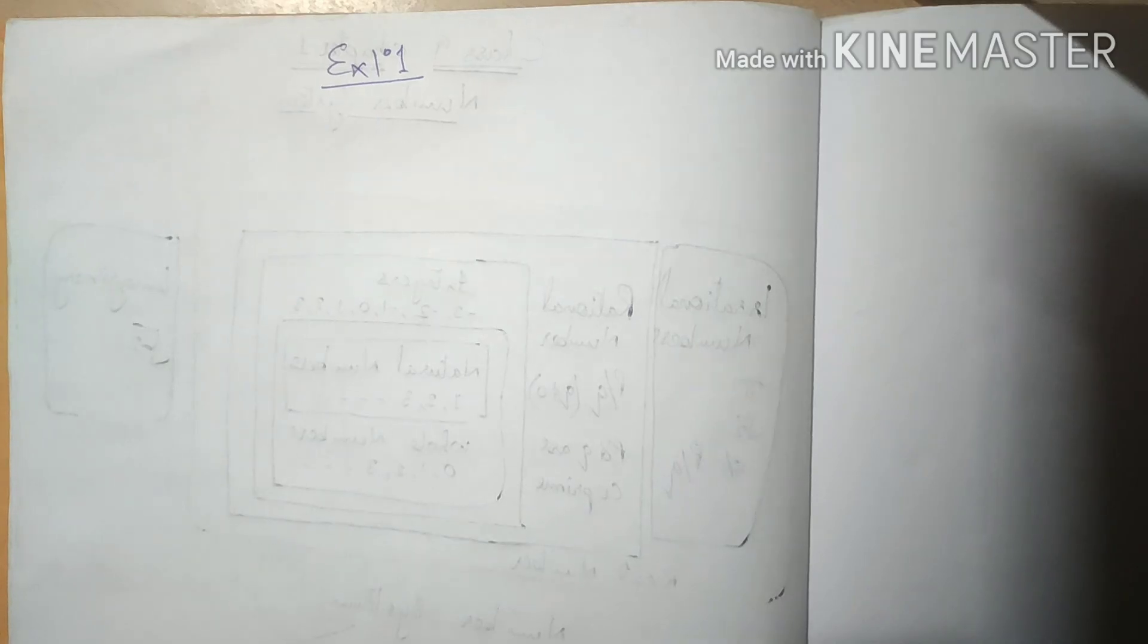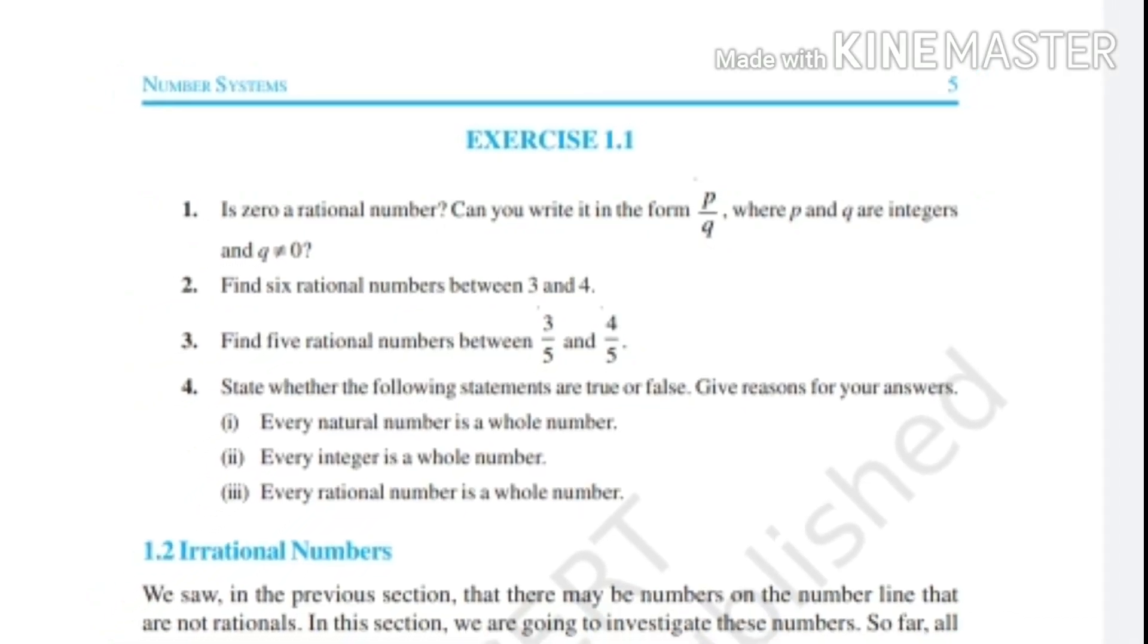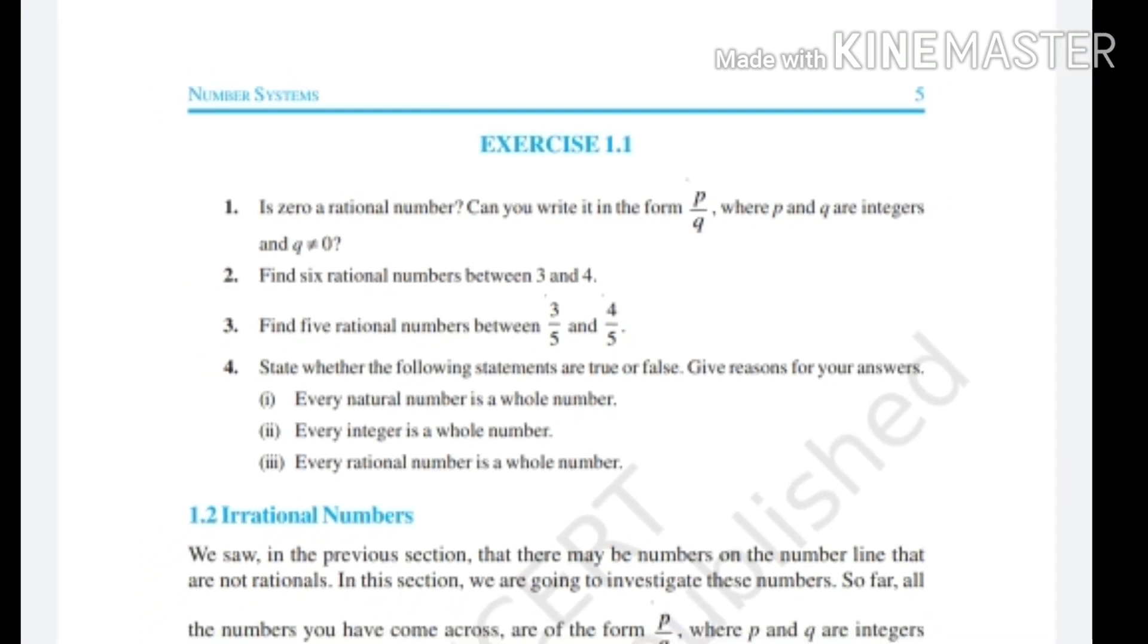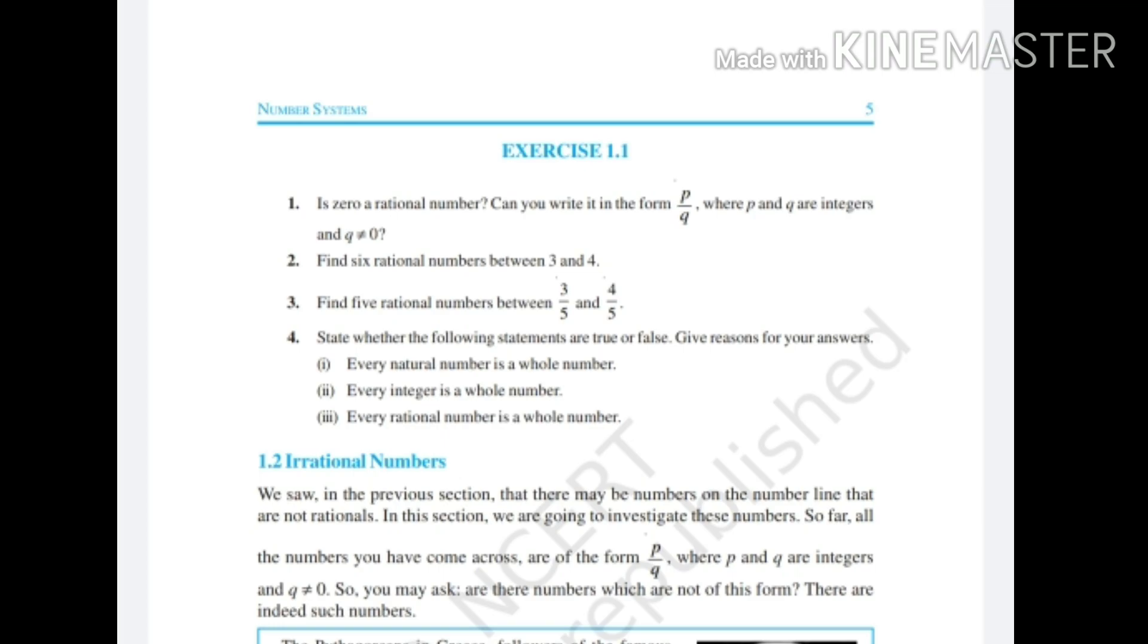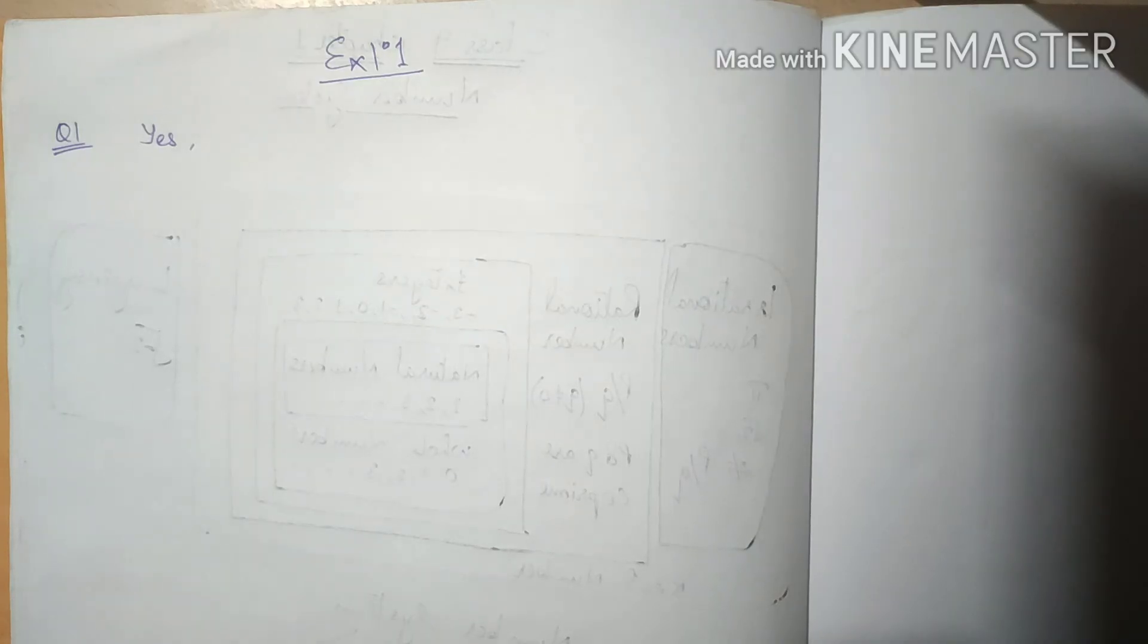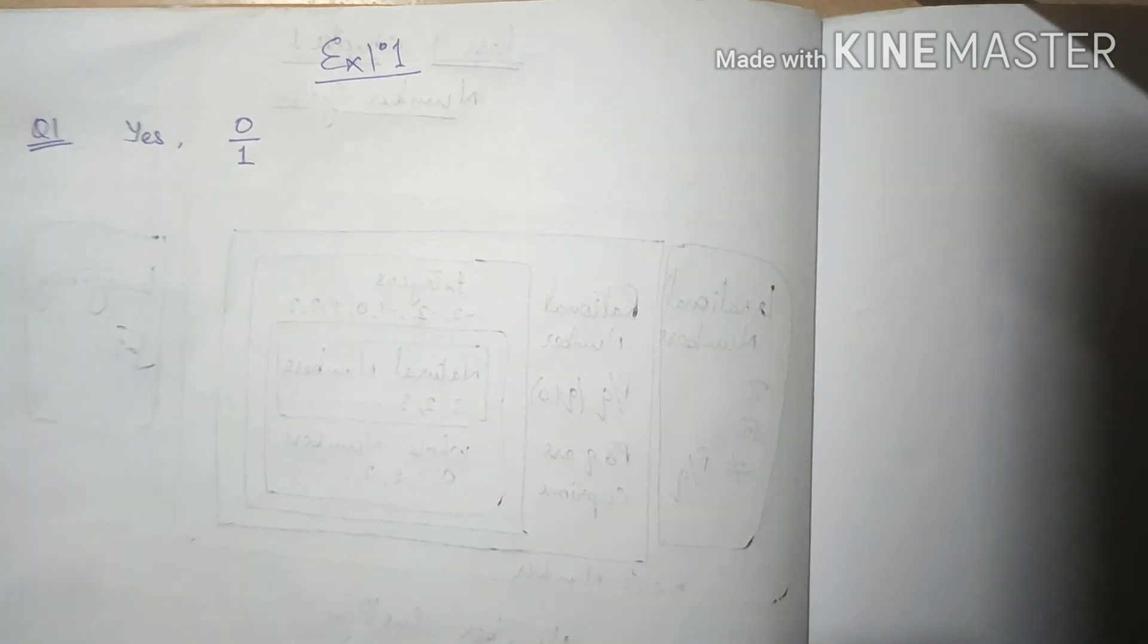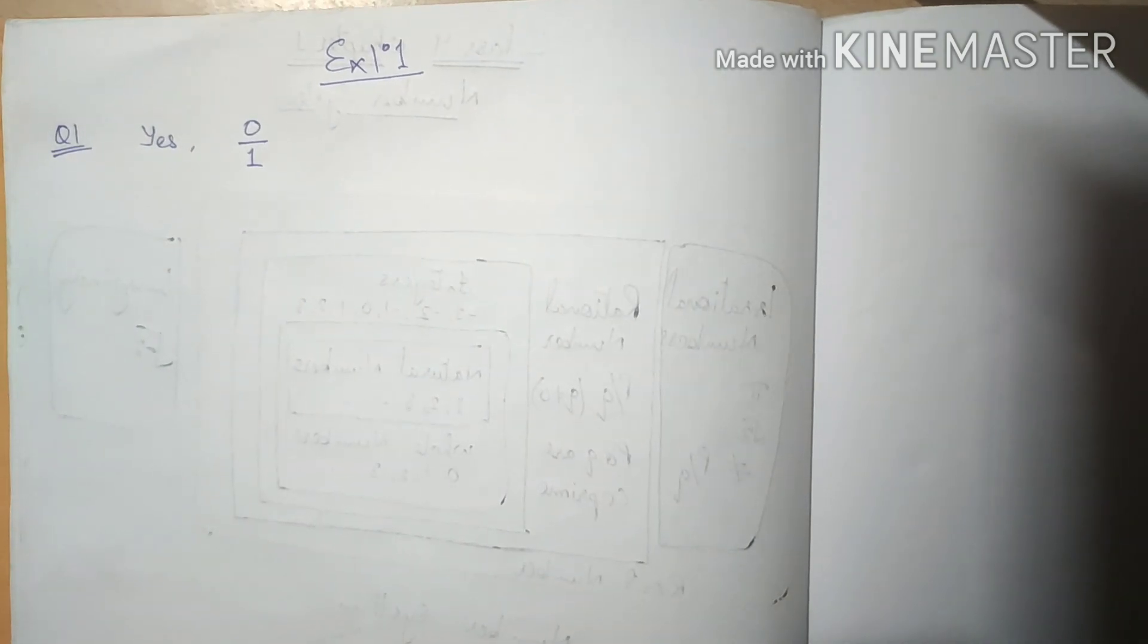So now let's start exercise number one. It is asked, is zero a rational number? The answer is yes, of course. If it is a rational number, we can write it in the form of P by Q, right? So what is the P by Q form of zero? That is zero by one, because P is zero and Q is one.